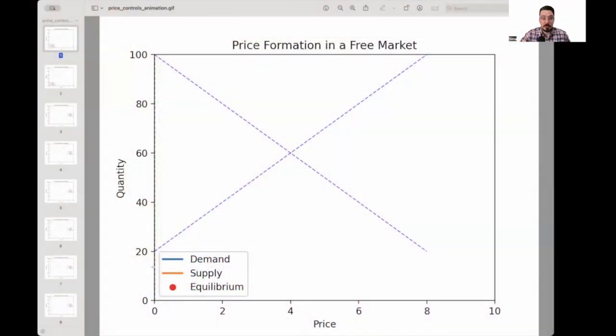To understand what happens under price control, let's imagine a demand and supply curve. This is demand. This is supply. And we have price on the x-axis and quantity on the y-axis. So what this chart is showing is demand is a function of price.